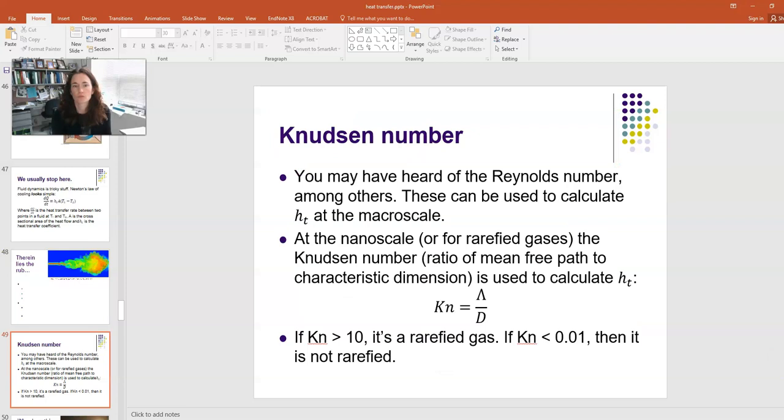So, what we use to describe this is the Knudsen number. Now, you may have heard, if you've been a student of physics for a while, of the Reynolds number and some of the other numbers that are used to characterize fluid flow. And these can be used to calculate your heat transfer coefficient at the macro scale. But at the nanoscale and in some other conditions as well, like rarefied gases and boundaries and things like that, you need to know your Knudsen number as well. Now, the Knudsen number is the ratio of the mean free path of your fluid particles to the characteristic dimension of your particle, D.